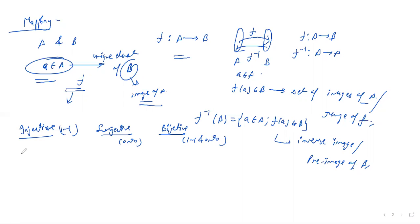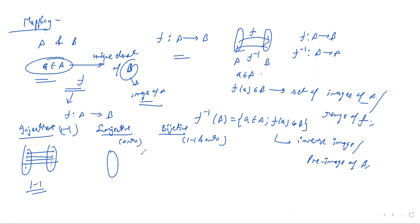In injective: if distinct elements of A have distinct images in B, then we say the function is one-to-one. In surjective (onto): every element in B is the image of at least one element a ∈ A. This mapping is called onto.